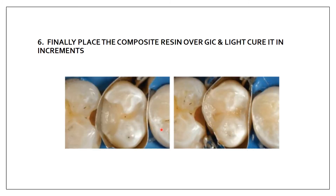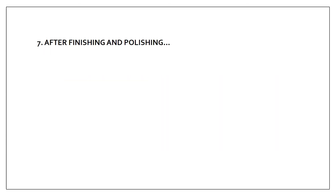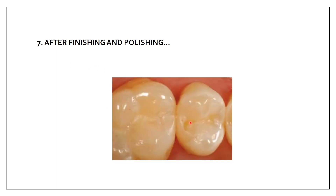Finally, you place composite resin over the GIC and light cure it in increments, as done for a normal composite restoration. After finishing and polishing, this is how the completed restoration looks - the GIC placed first with composite resin placed over it.